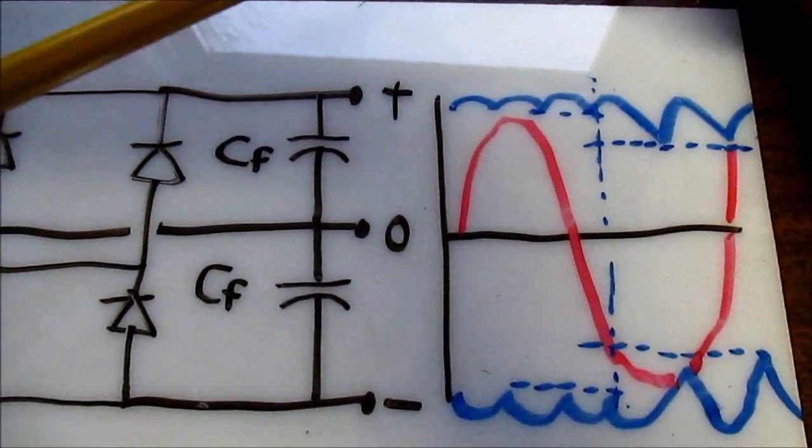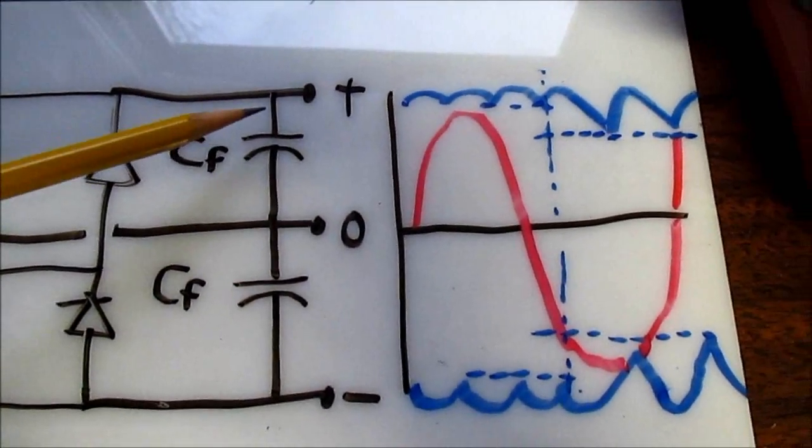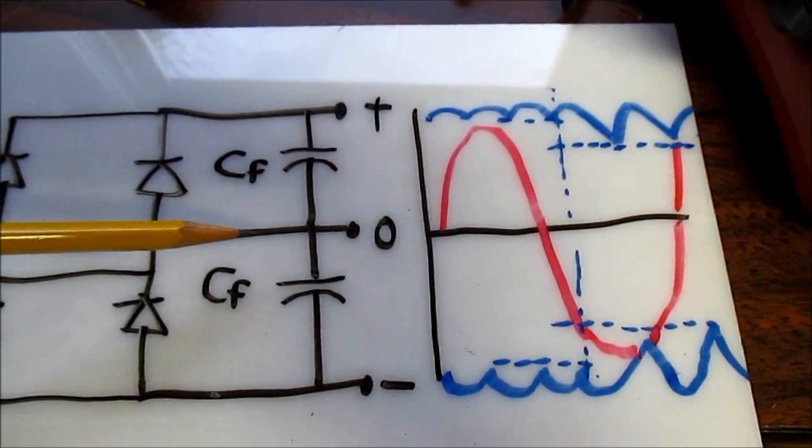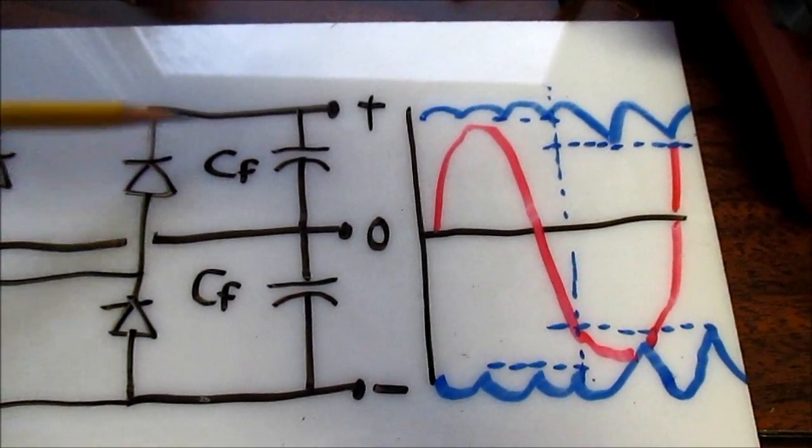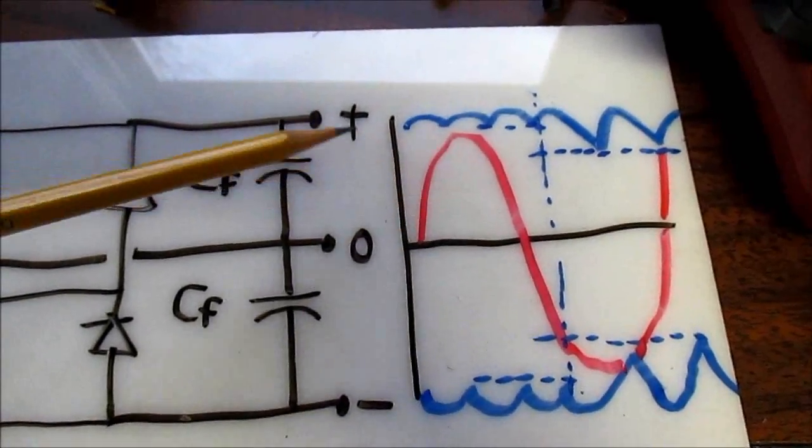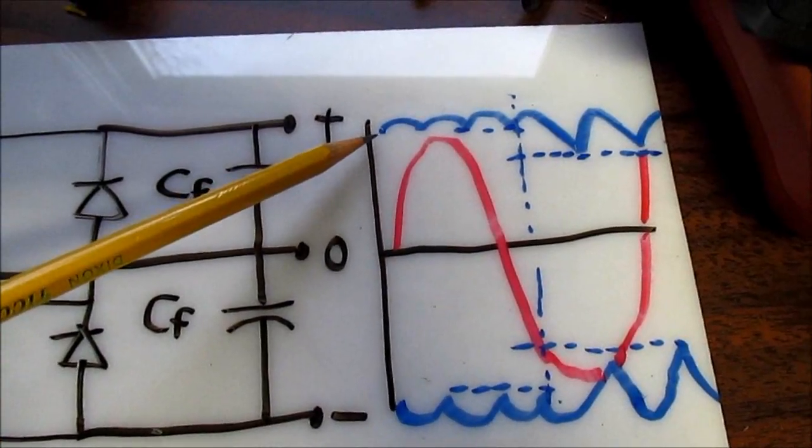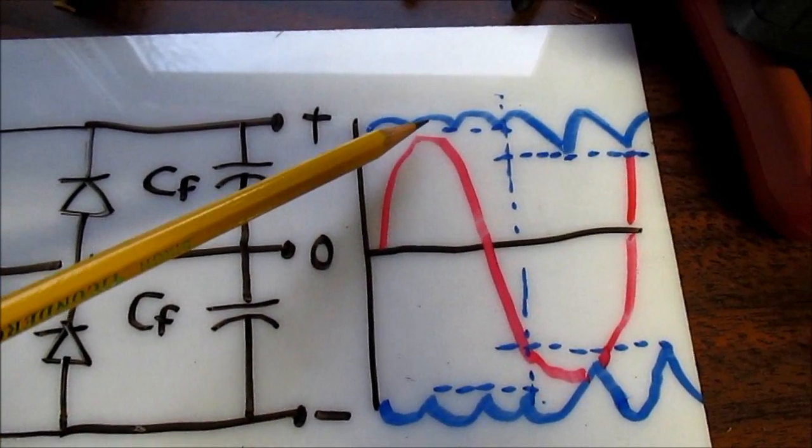As you might know, with the power supply you have a filter capacitor because the rectified AC waveform is going to be big pulses. So you put the capacitor in there so you get a smooth, or relatively smooth, DC rail.